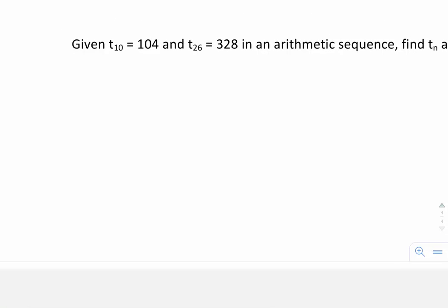I'm going to solve for A and D by setting up a system of linear equations. So I have 104 equals A value, which I don't know what it is, plus 10 minus 1. Again, 10 is replacing the N value for that term. And this is all times D, which I don't know either.